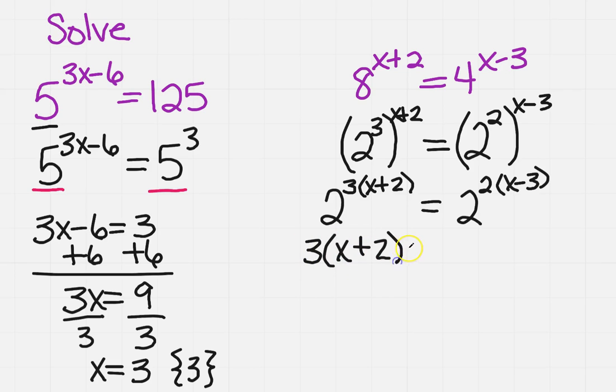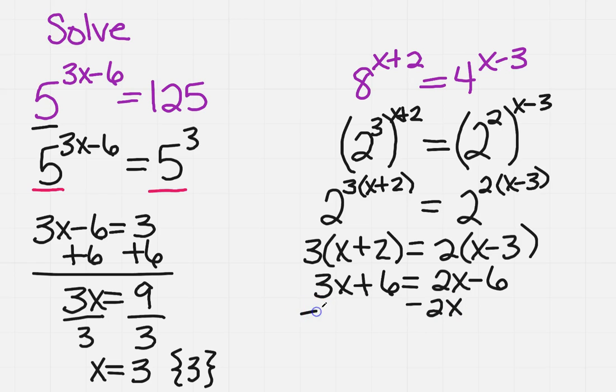I'm going to use the distributive property and get 3x plus 6 equals 2x minus 6. I'm going to get all my x's on one side. I think subtracting the 2x makes more sense. And then I'm going to subtract 6 on both sides. So that cancels and that cancels. So I've got x equals minus 12.